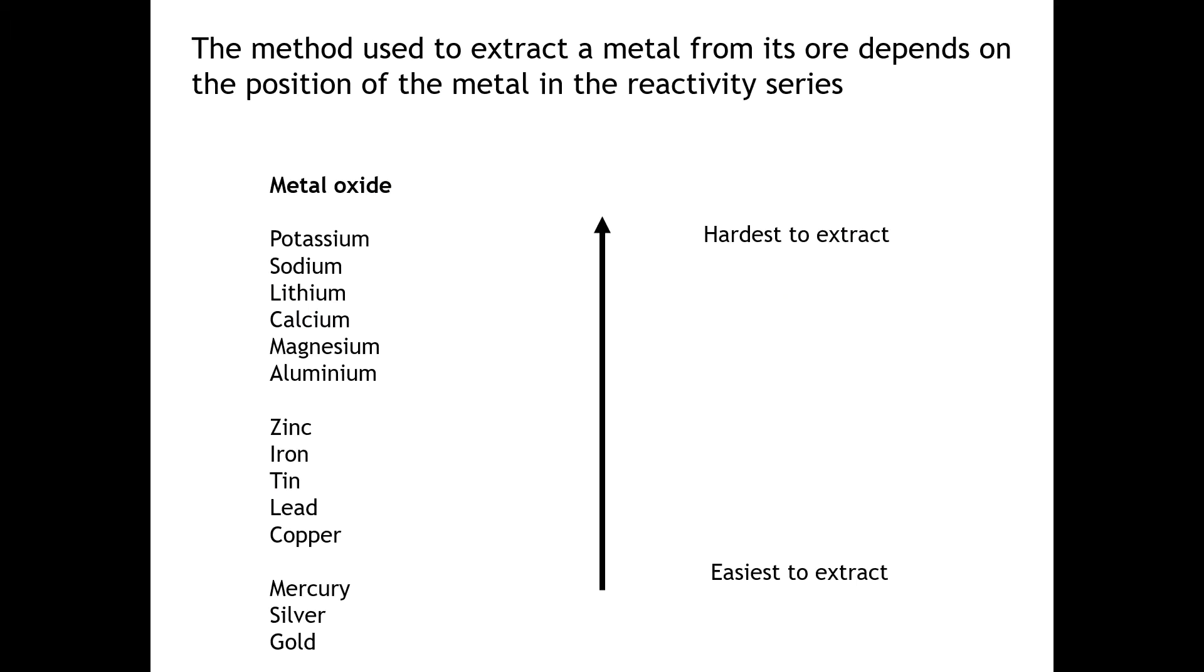The method used to extract a metal from its ore will depend on its position in the reactivity series. This is the order of reactivity, starting from the most reactive metals, alkali metals like potassium, sodium, lithium, right down to unreactive metals such as mercury, silver, and gold. These ones are fairly reactive and require different methods of extraction.